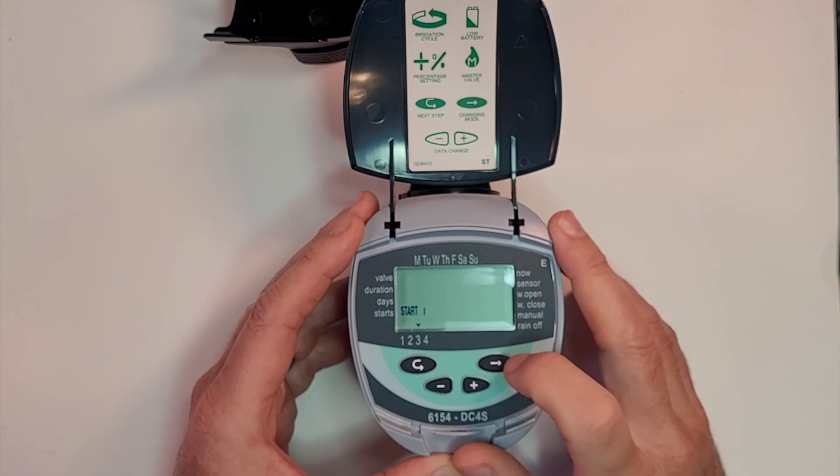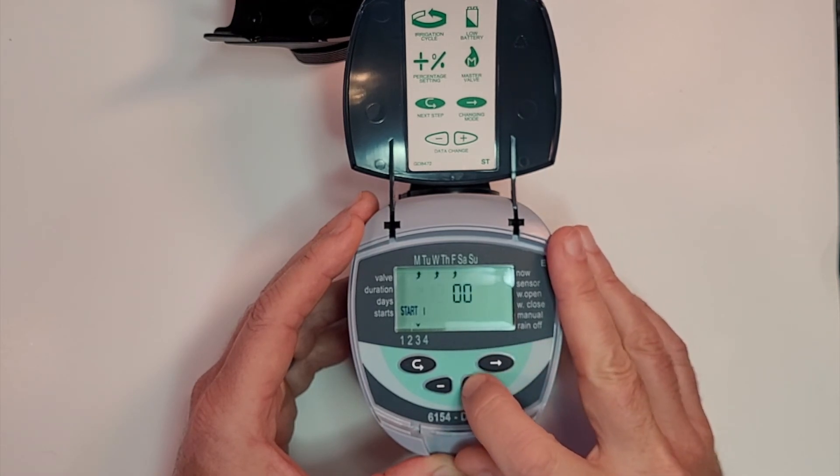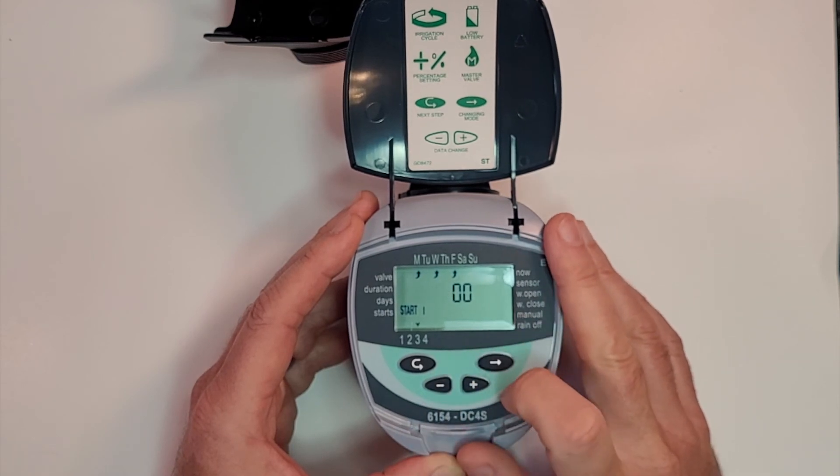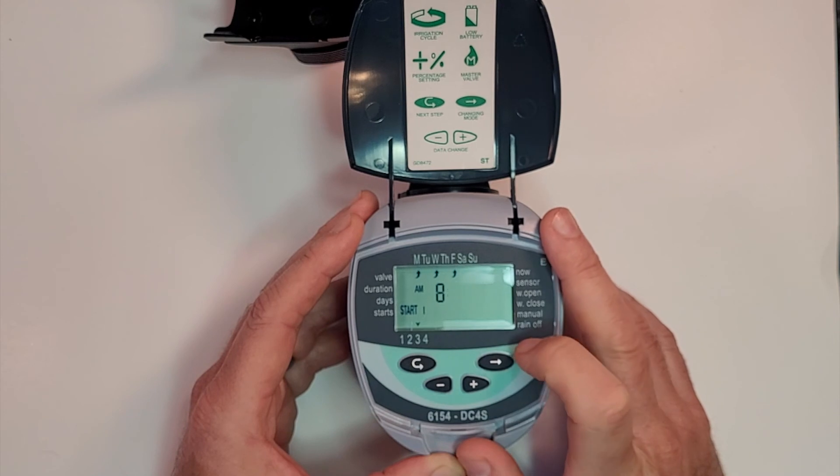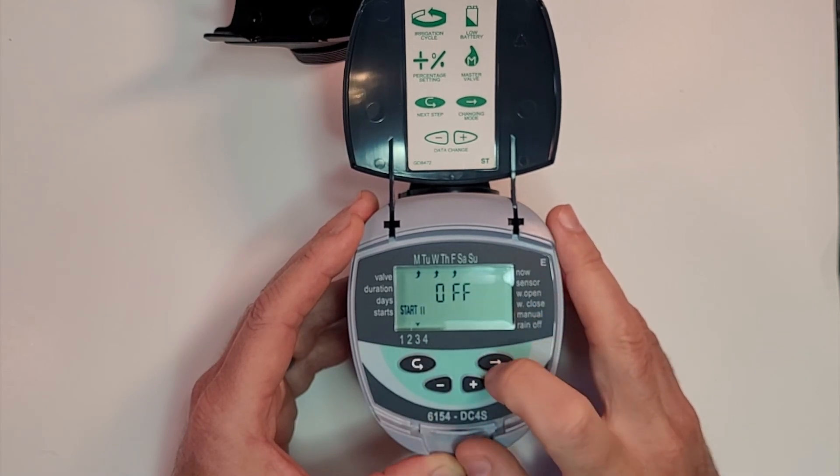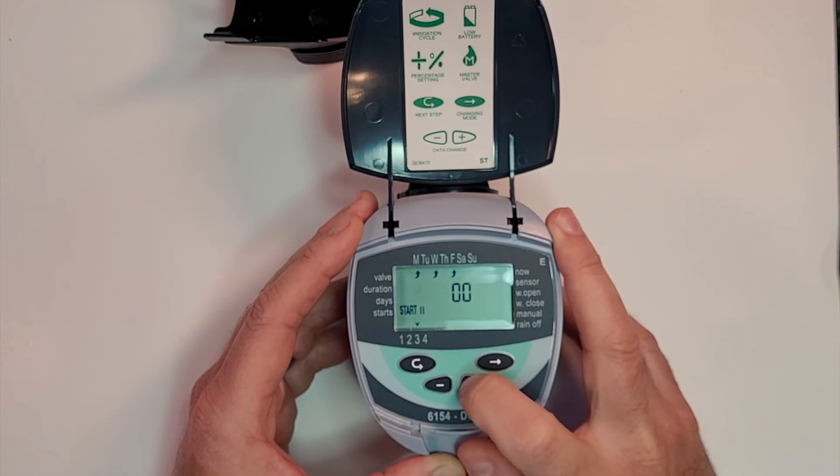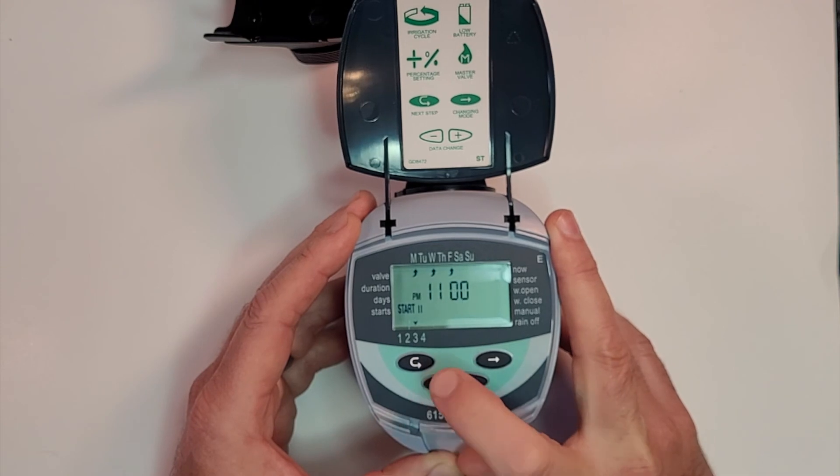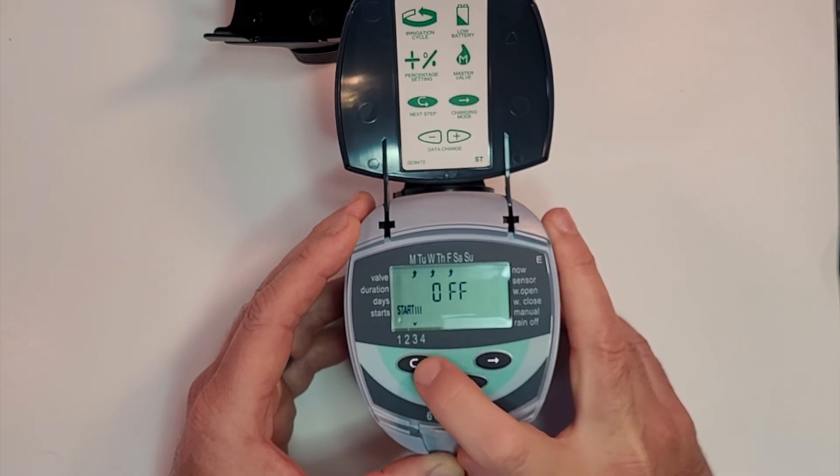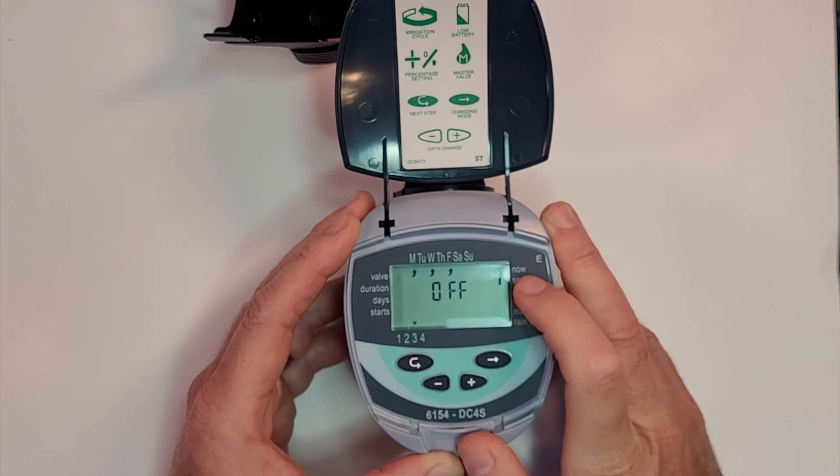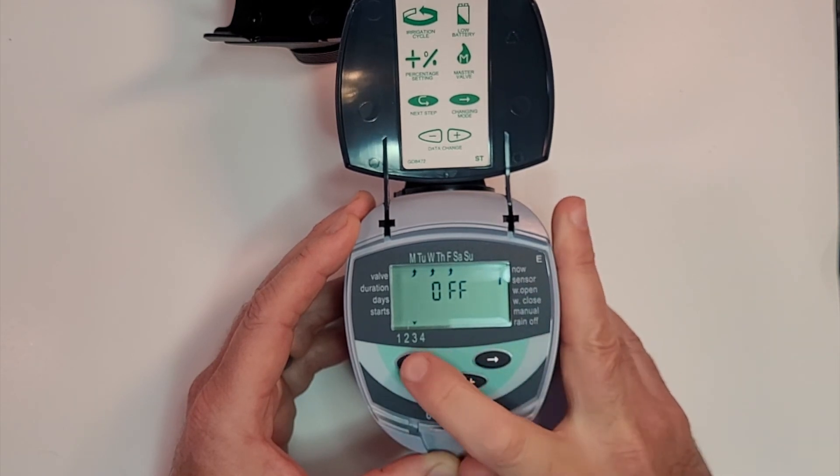Start time one, we do want to run it all three of those days that you see there, and we're going to start it at, let's start it at 8:30. So eight and then add the pluses so we get the 30. And then start time two we're actually going to use as well. So we want to irrigate 30 minutes twice a day at 5 PM.